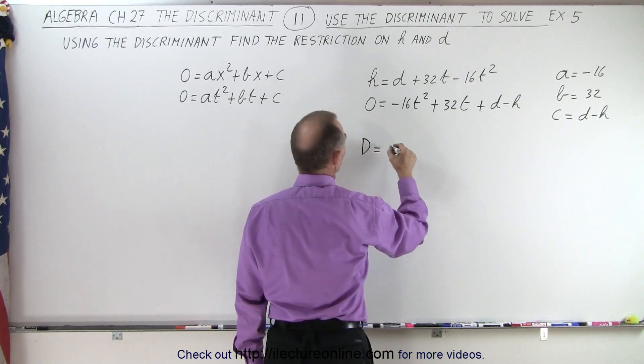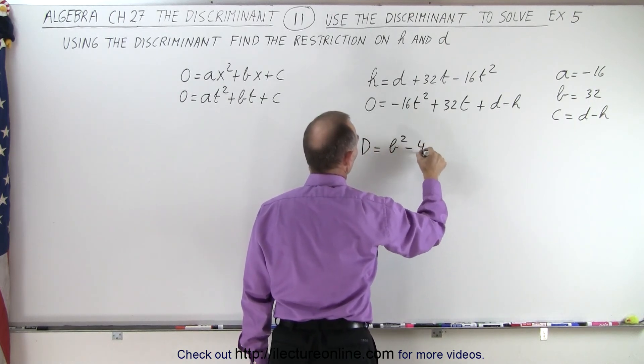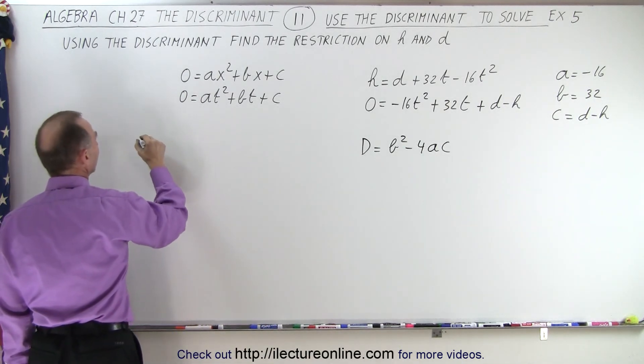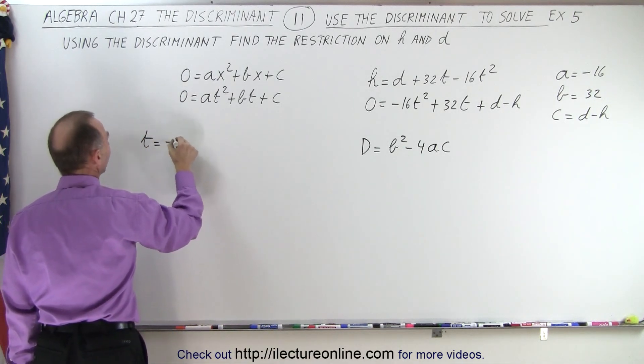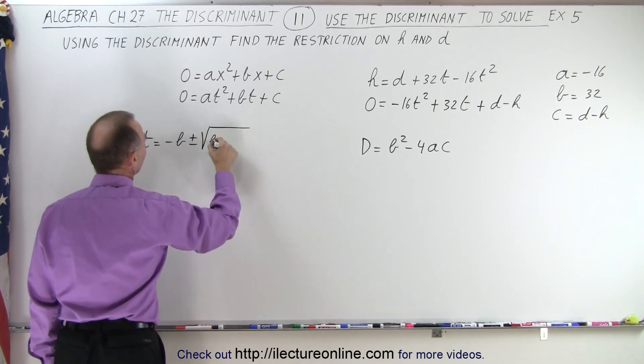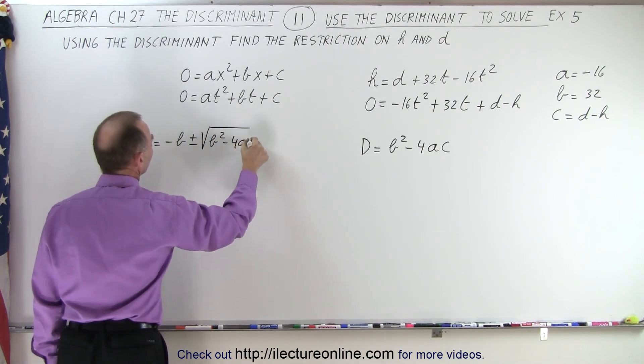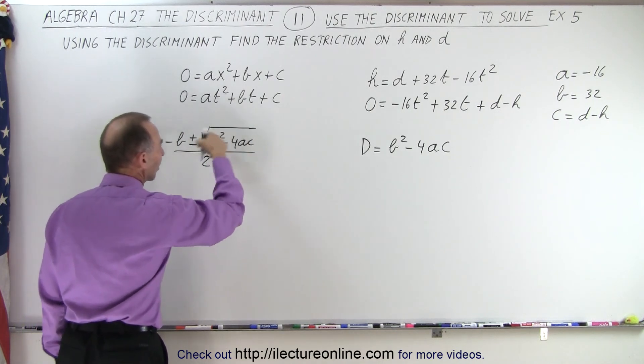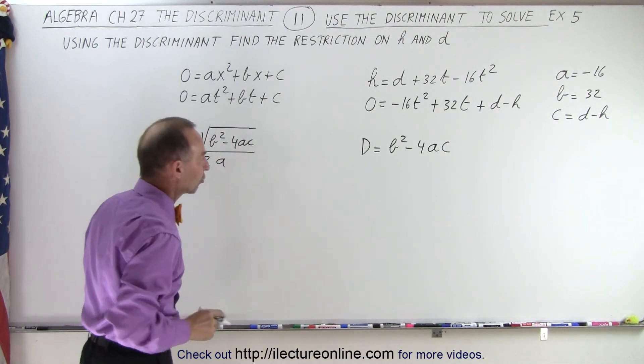The discriminant is equal to b squared minus 4ac. That comes from the quadratic formula where t equals minus b plus or minus the square root of b squared minus 4ac, all divided by 2a. What's inside the radical is the discriminant.